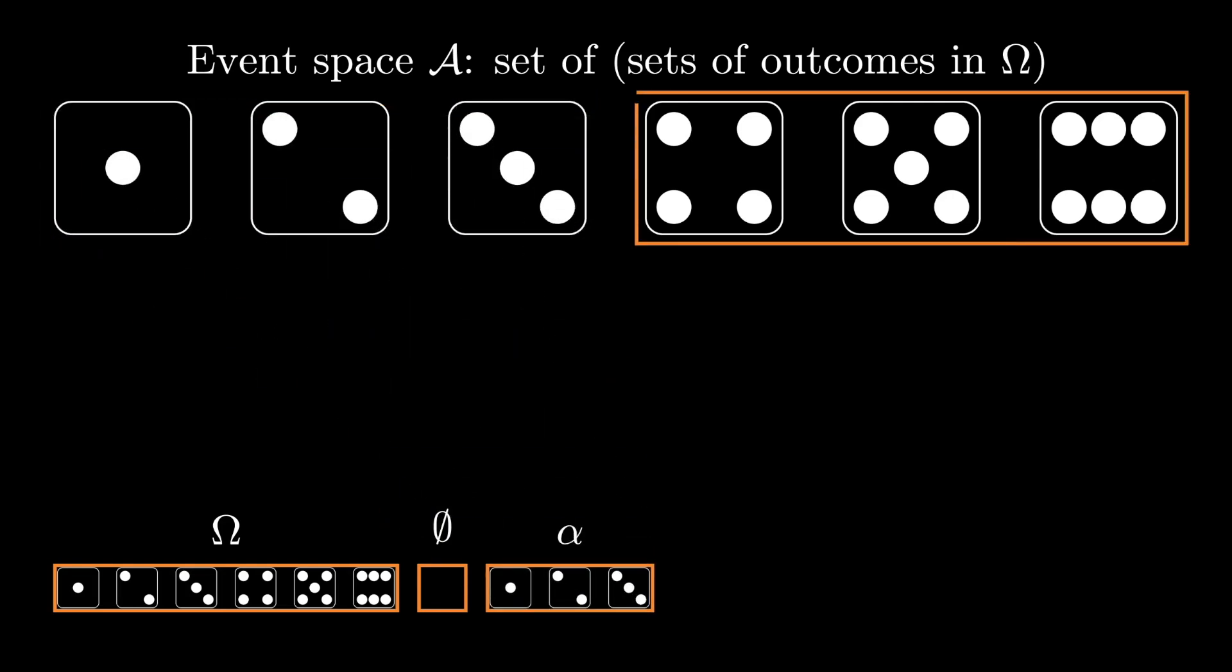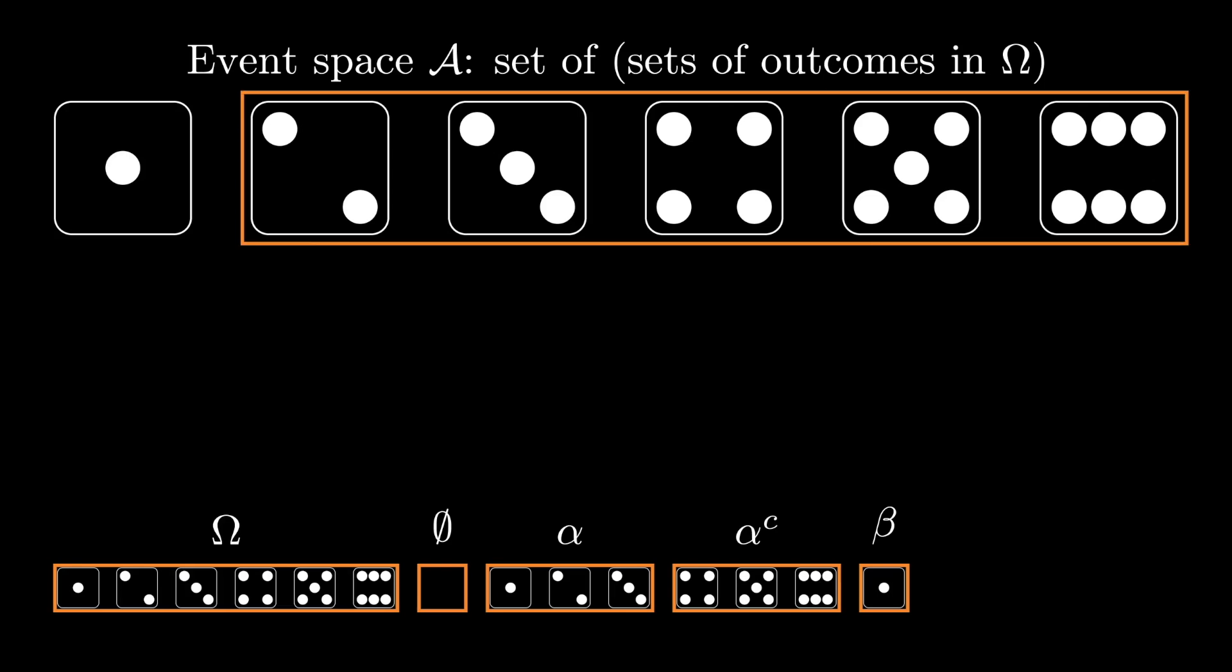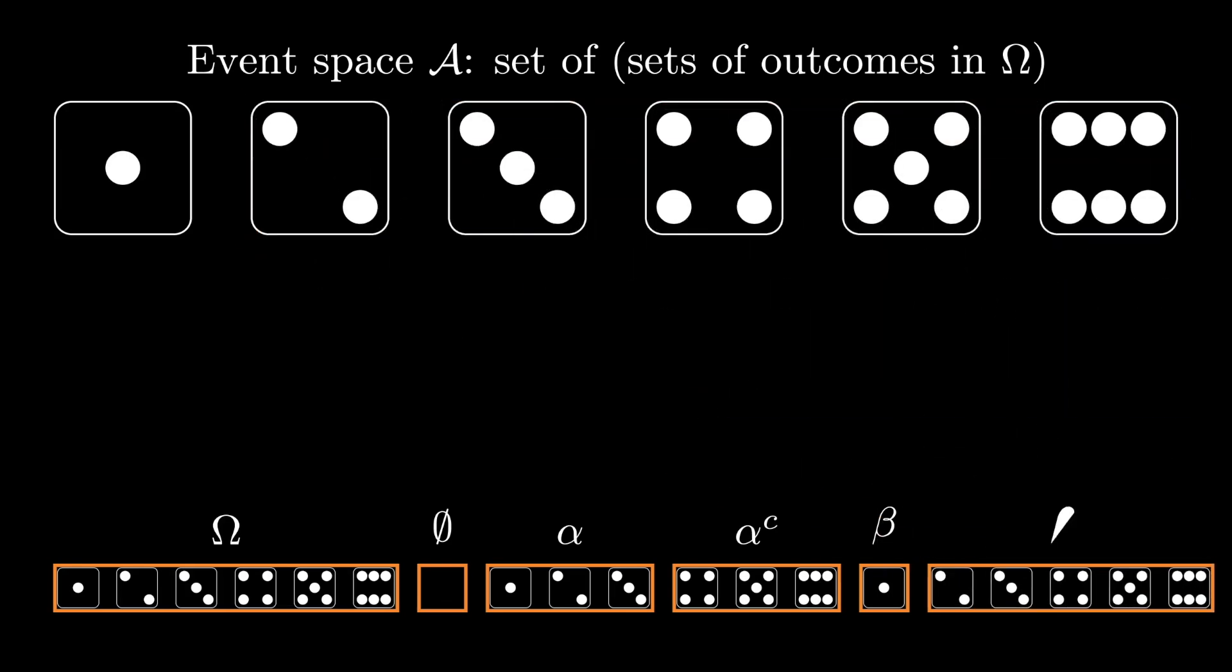Then, in order to satisfy our closure properties, we have to include the complement of alpha. Note that both the union and the intersection of alpha and alpha complement are already in the event space. Now let's grab another event, this time let's call it beta and make it just the outcome 1. As before, we need to include its complement, the set 2, 3, 4, 5, 6. Let's denote these beta and beta complement, respectively.